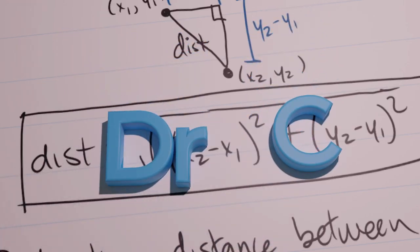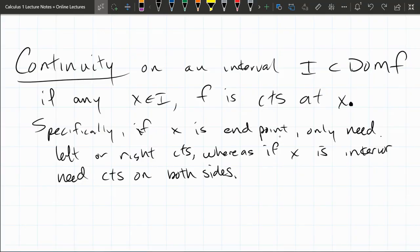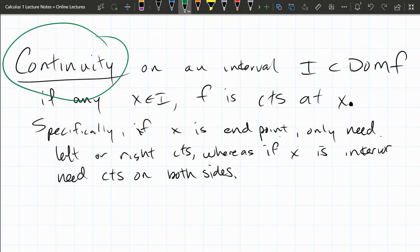We just talked about continuity, and here's continuity on an interval, so really similar to before, except before was a single x value or single point.